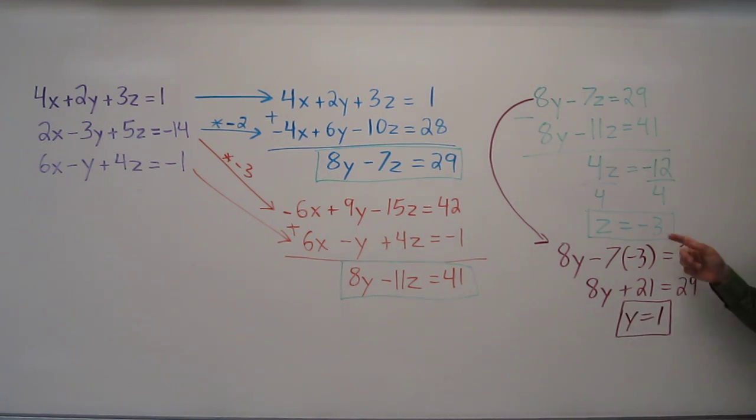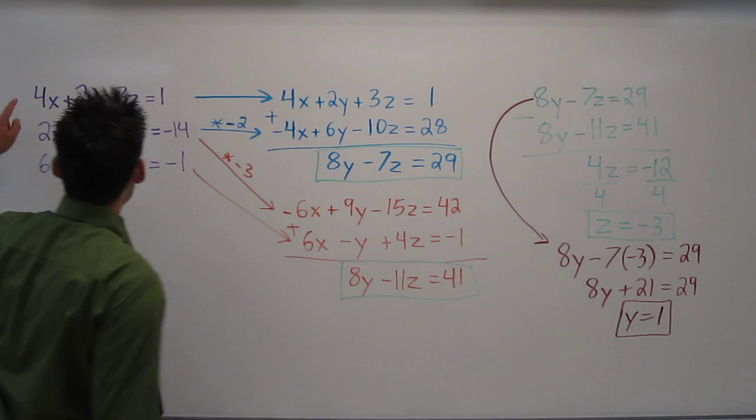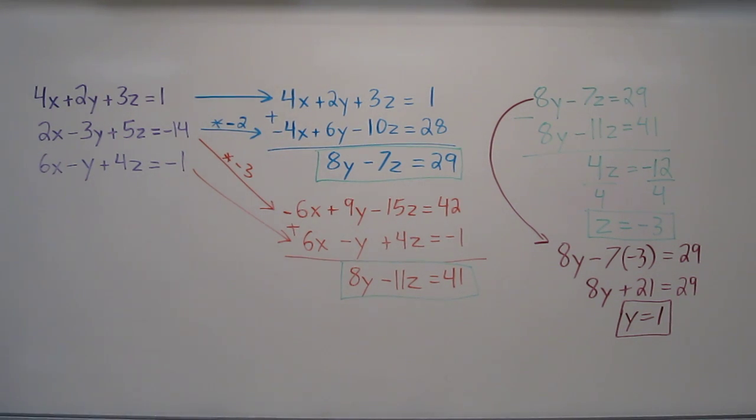So at this point I know z equals negative 3 and y equals 1. I just need to determine what x is. So if we go back to our original three equations, we can substitute in our z and our y and figure out what x is. Let's use the first equation.